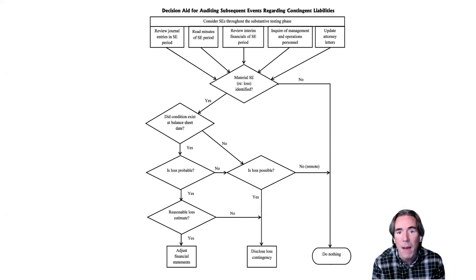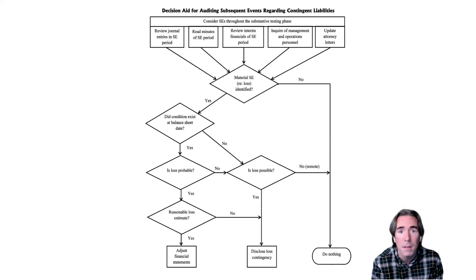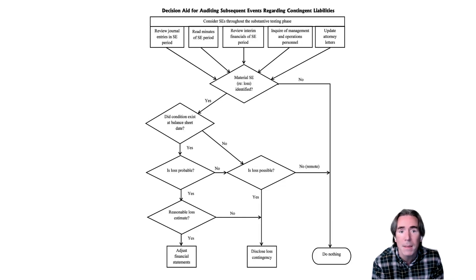After we have all this, we'll ask the very simple question: is there a material subsequent event? If the answer is no, then we're done — there's no additional effort that is required. If we did identify one, we have a number of different paths to follow.